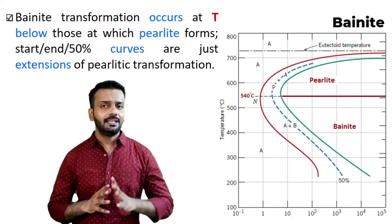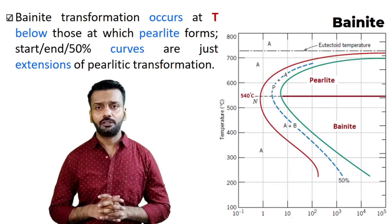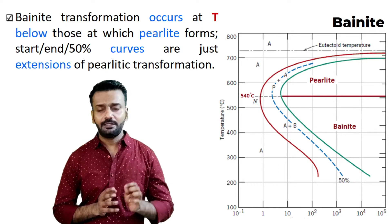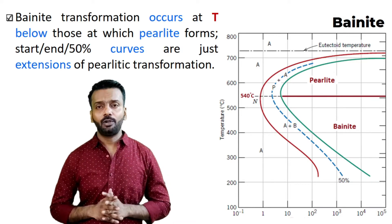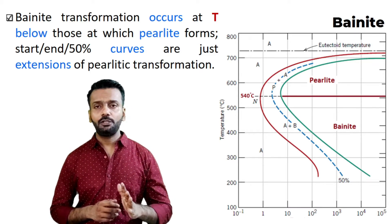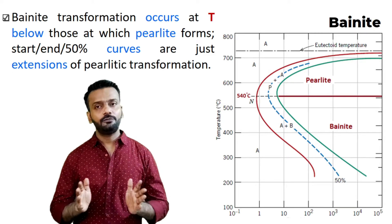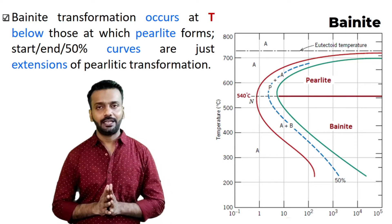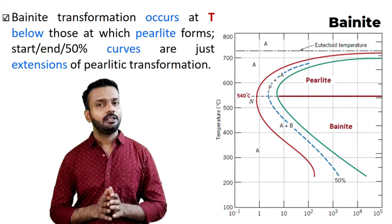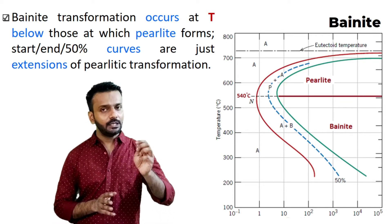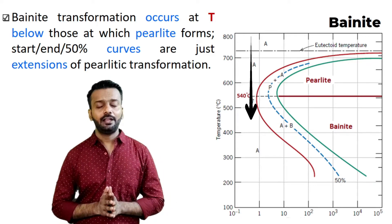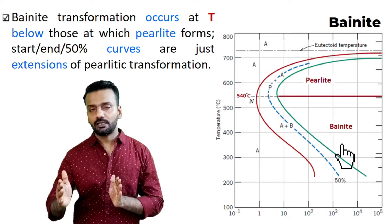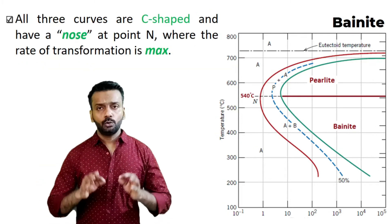This is a TTT plot where we can exactly see how we can form the bainite structure. The bainite structure will form when we rapidly cool the material below 540 degrees Celsius. Let me remind you that this TTT plot is for eutectoid composition — TTT plots are different for different compositions of material. Here it is exactly for the eutectoid plot of the iron and carbon phase diagram. So if you want to get bainite structure, we have to cool the material below 540 degrees Celsius very rapidly, then hold it at that temperature, then do slow cooling, and you will get the bainite structure.